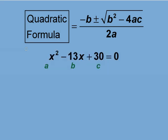With the equation we're trying to solve, we have an a value of 1, a b value of negative 13, and a c value of 30.